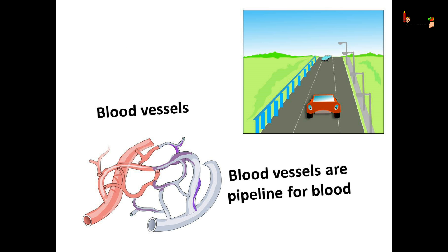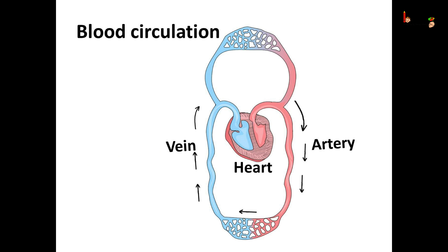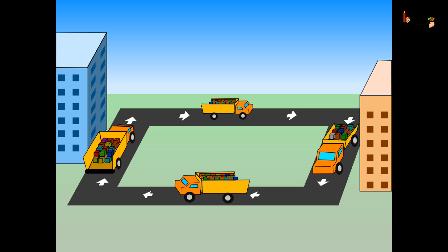For good transport, good roads are required — a road which connects all the destinations. The road for transportation inside our body is the blood vessels. The blood flows through these pipe-like vessels. The heart pumps the blood and the blood starts flowing through the blood vessels. The vessels which carry blood away from the heart are called arteries. The arteries take blood to the different organs, just like a trunk which unloads its load at the destination and then gets loaded again with other things.